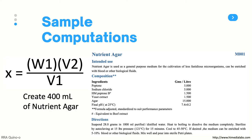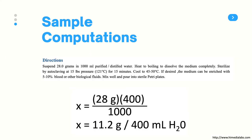Let's now have some sample problems. The manufacturer's instructions for nutrient agar say to suspend 28 grams in 1,000 ml of purified or distilled water. How much nutrient agar powder do you need for 400 ml of media? If you answered 11.2 grams per 400 ml, you would be correct. We simply multiplied 28 grams times 400 over 1,000, which gave us 11.2 grams to be placed in 400 ml of distilled water.